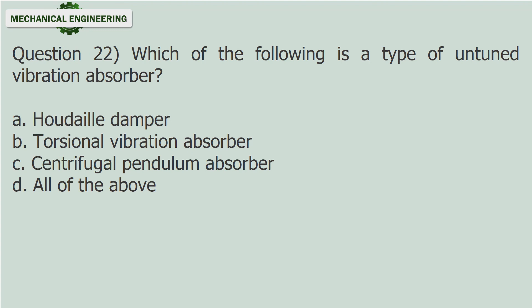Question 22: Which of the following is a type of untuned vibration absorber? a. Hydel damper. b. Torsional vibration absorber. c. Centrifugal pendulum absorber. d. All of the above.